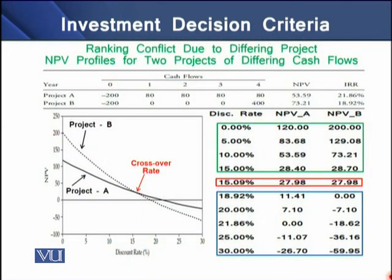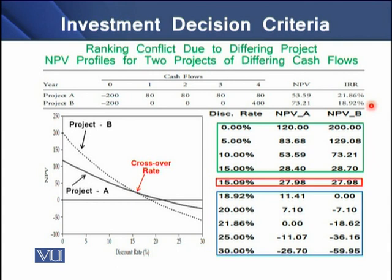A graph on screen shows ranking conflicts due to differing project cash flows. We have two projects, A and B, with the same initial cash outflow followed by cash inflows with different patterns. Project A has an NPV of $53.59 and an IRR of 21.86%, while Project B has an NPV of $73.21 and an IRR of 18.92%. If viewed independently, both projects can be accepted — Project A has higher IRR but Project B has higher NPV.